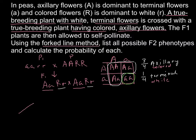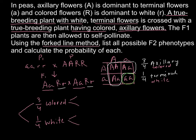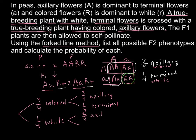We start the forked line with the first trait. Three quarters of plants are colored and one quarter are white. From each of those branches we make additional forks for the second trait: three quarters axillary and one quarter terminal for the colored branch, and three quarters axillary and one quarter terminal for the white branch.